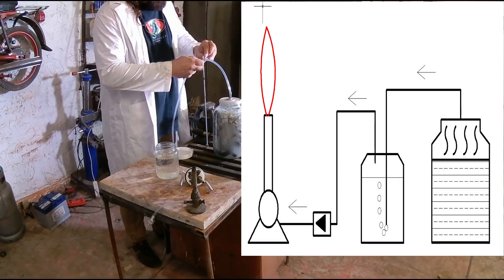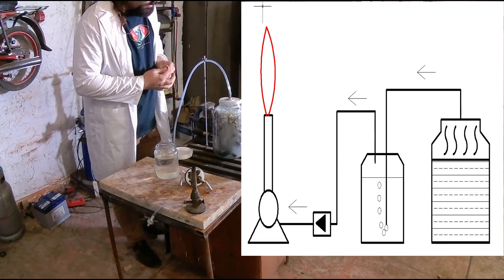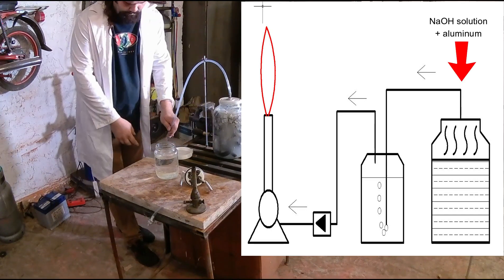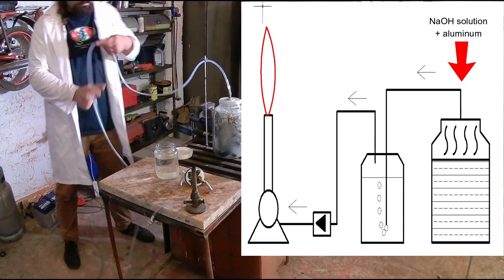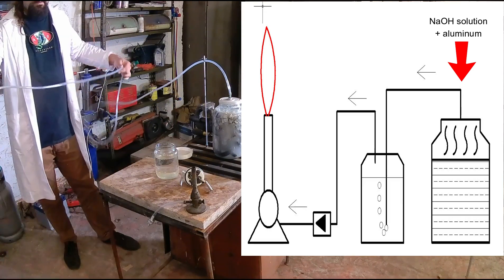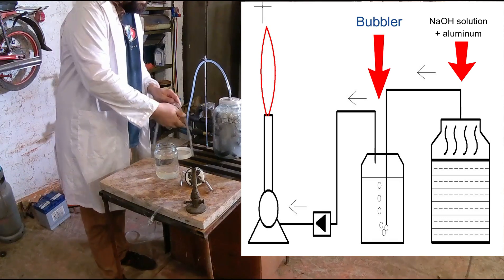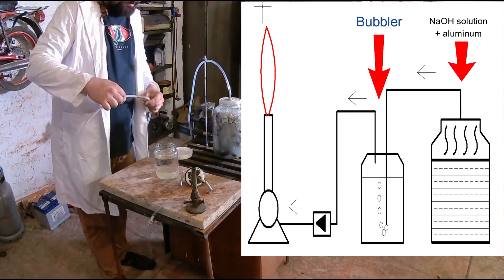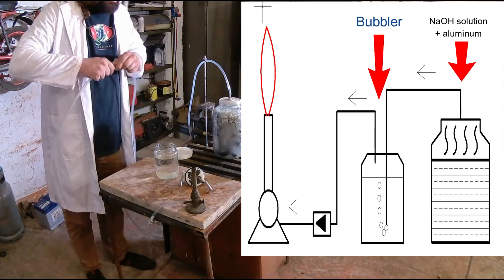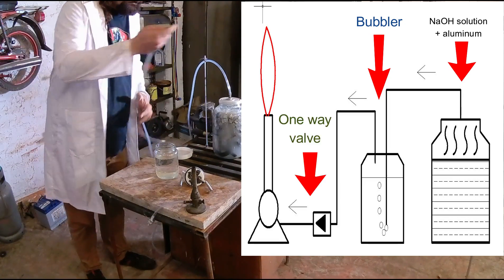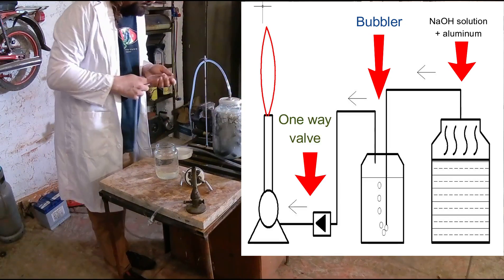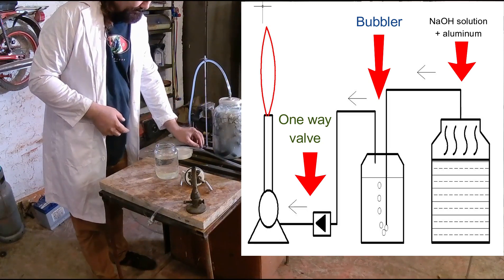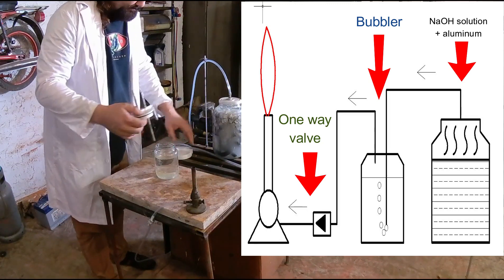You can see how it works in this very crude diagram I've made. First you have the main jar, the one you've already seen. Then the hydrogen bubbles, the gas that is produced travels to a second jar which acts as a bubbler. Here you can actually visualize the output of the hydrogen and it also acts as a safety device preventing the flashback in case of an explosion to go back to the main jar.